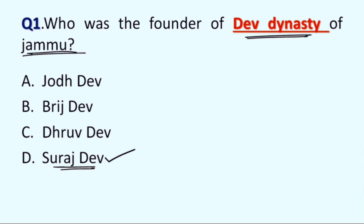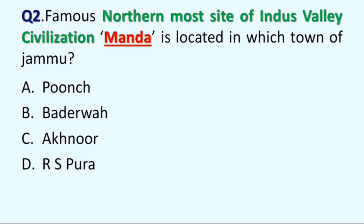Next question is: the famous northernmost site of Indus Valley civilization, Manda, is located in which town of Jammu? Option A: Punch, B: Badrwa, C: Akhnur, D: Raispora. Correct answer is Option C, Akhnur. Manda lies in Akhnur town of Jammu district.